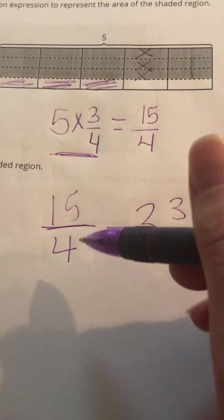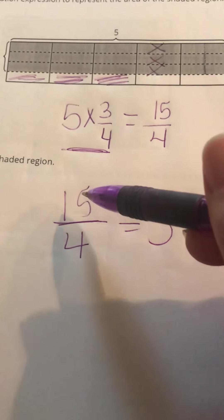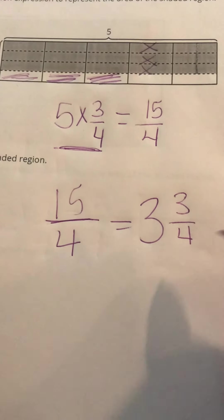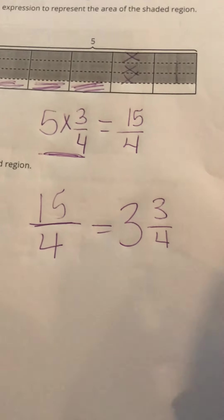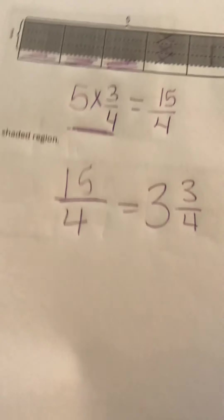Because 3 times 4 is 12, and then if I do 15 minus 12, I have 3/4 left over. So the area would be 3 and 3/4 square units.